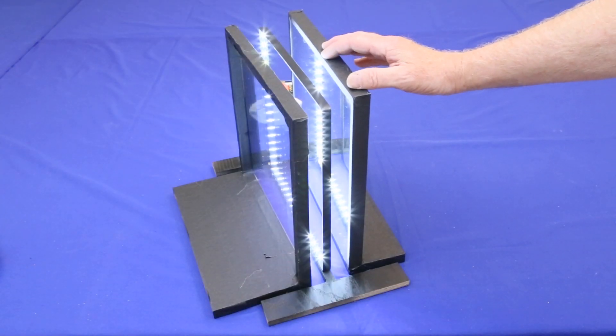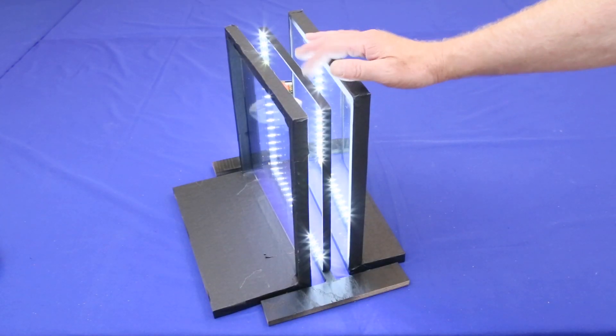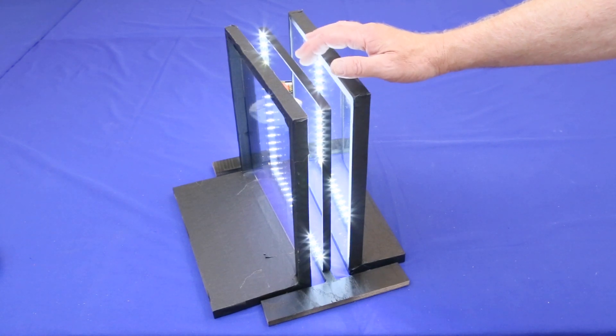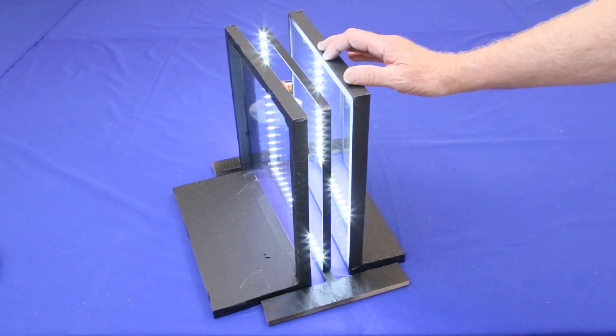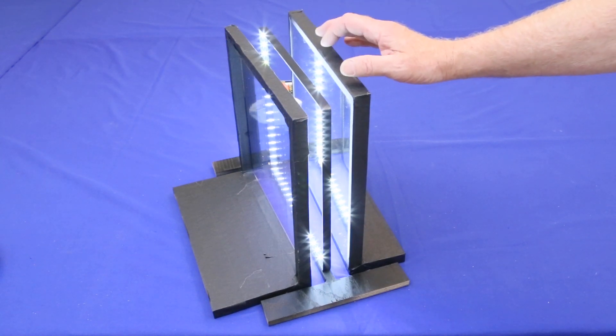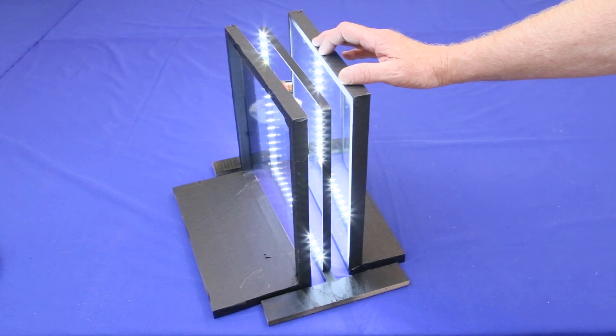An infinity mirror consists of two mirrors facing each other with a border of lights between them. Images of the lights bounce back and forth repeatedly between the two mirrors to create a series of images of the lights that slowly decrease in both size and brightness.